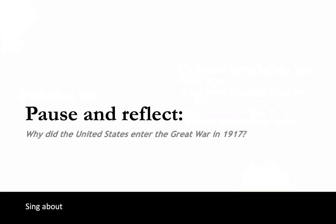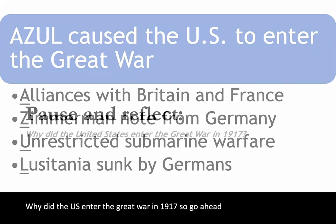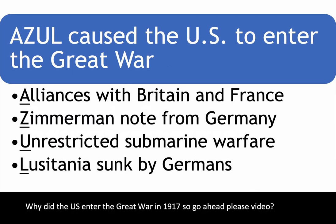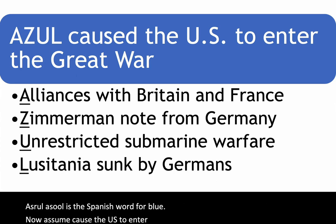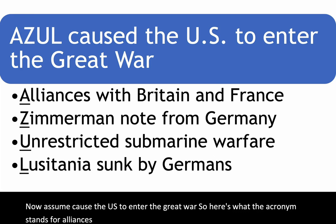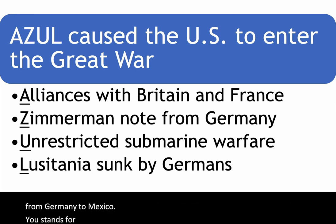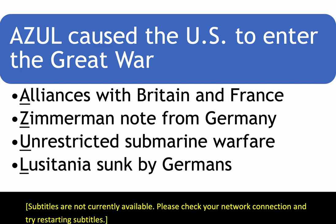Here's where you should pause and reflect again. Why did the U.S. enter the Great War in 1917? Here's what you should know as the answer. AZUL — the Spanish word for blue — caused the U.S. to enter the Great War. A stands for Alliances with Britain and France. Z stands for the Zimmermann Telegram from Germany to Mexico. U stands for Unrestricted Submarine Warfare, which was what the Germans were doing by 1917. And L stands for the Lusitania, which was sunk by the Germans and had over 100 Americans on board.